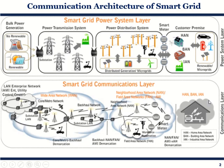You can notice that the different communication layers which have been defined and named basically cover a certain area. If you are talking about a small area, it is a HAN or Home Area Network. When you talk about a slightly bigger area — the distribution side — it will be a Neighborhood Area Network. When you come to the transmission side or a much larger area, it is a Wide Area Network.